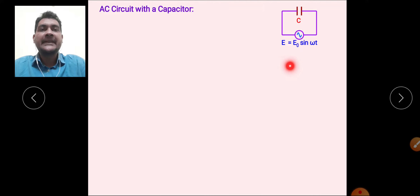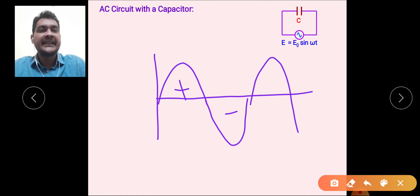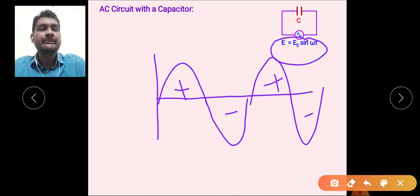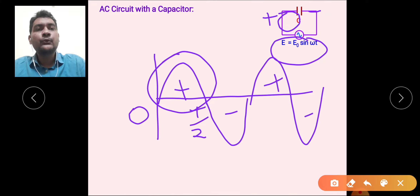The potential difference changes with respect to time. When alternating EMF is applied, charge is stored on the capacitor. Since the EMF is alternating, for some time it is positive and for some time it becomes negative. When the applied voltage is positive — between time interval 0 to T/2 — the charge on the left plate is positive and on the right plate is negative.